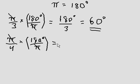Pi's cancel out. 180 degrees divided by 4 is 45 degrees.